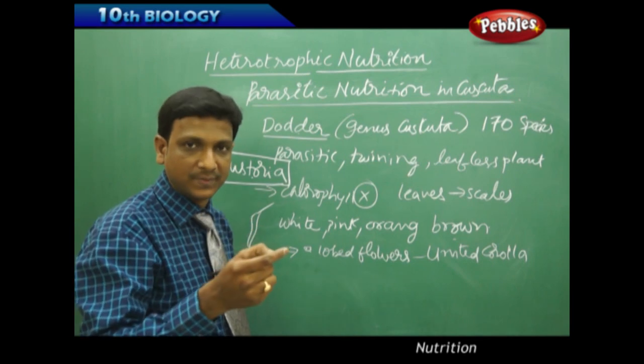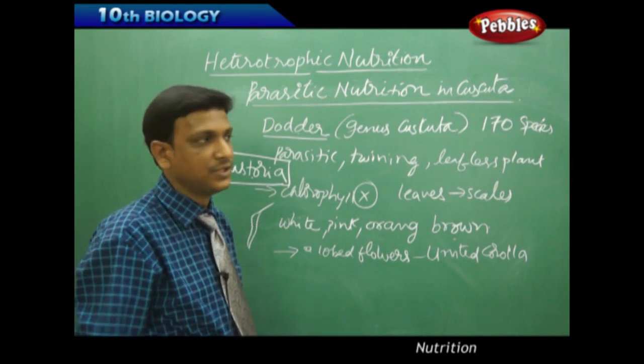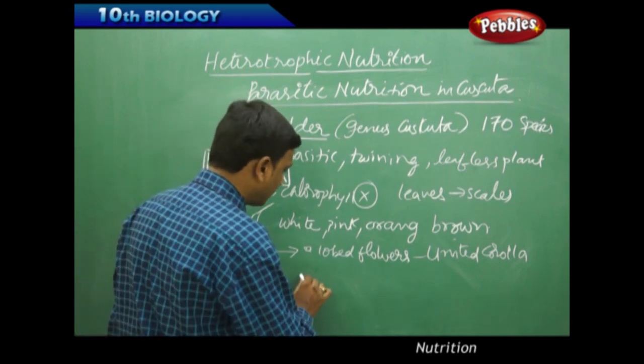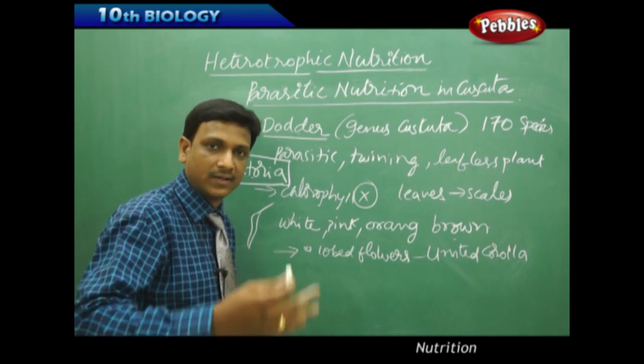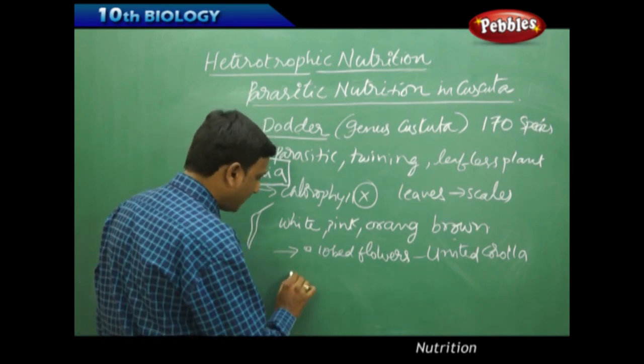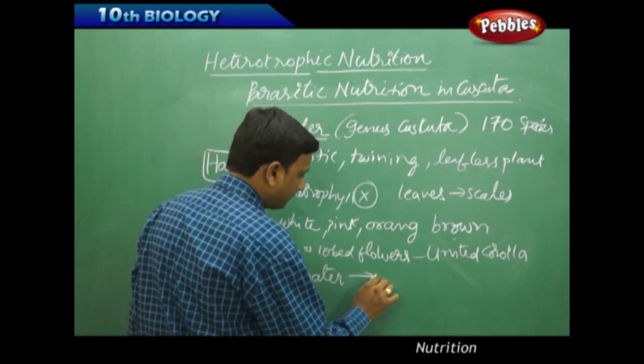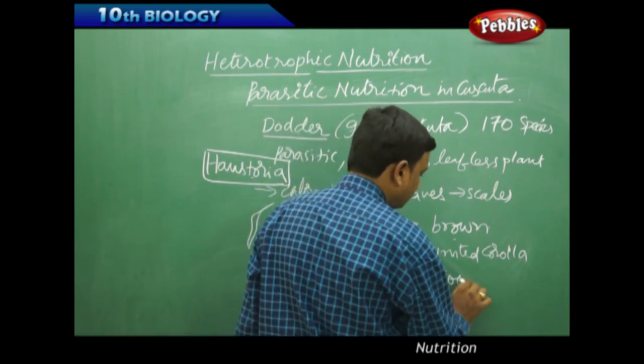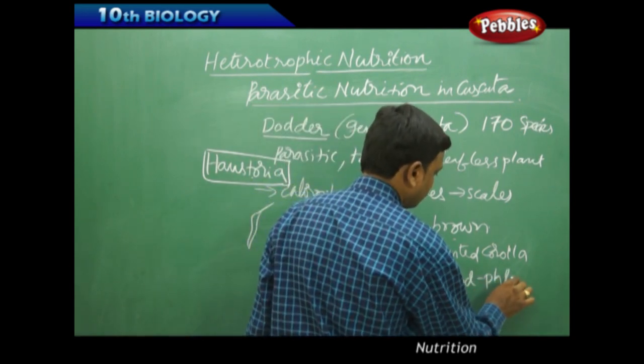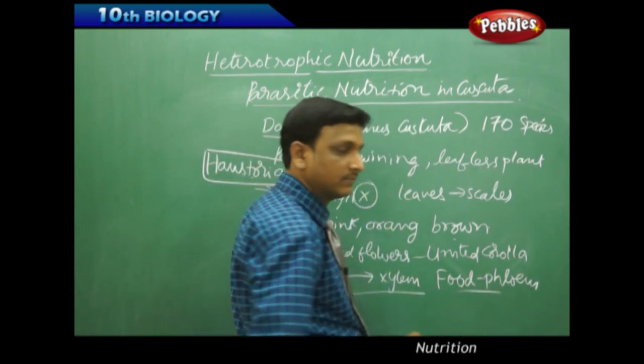It will penetrate into the host plant and absorb the nutrients. How are the nutrients absorbed? We know that plants have vascular systems in which water and food are transported. This haustoria absorbs water from xylem tissue and food from phloem tissue - water from xylem, food from phloem.